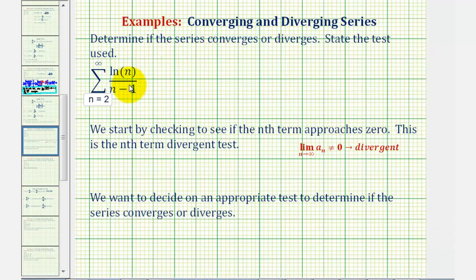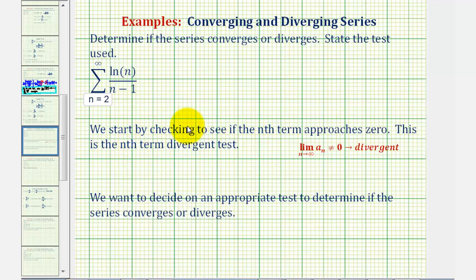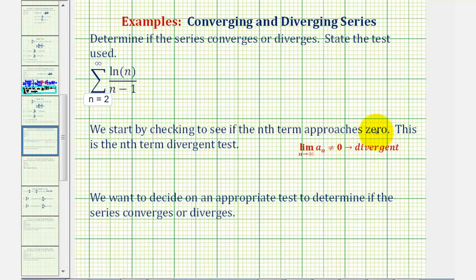We want to determine if the given infinite series converges or diverges. Let's start by applying the nth term divergent test, which is a test to see if the nth term approaches zero. By the nth term divergent test, if the limit as n approaches infinity of a sub n doesn't equal zero, we can quickly determine that this series is divergent.